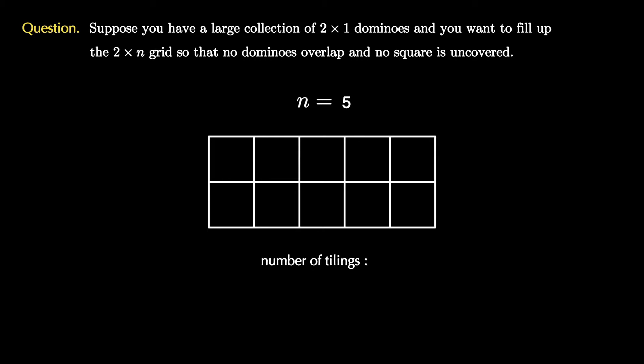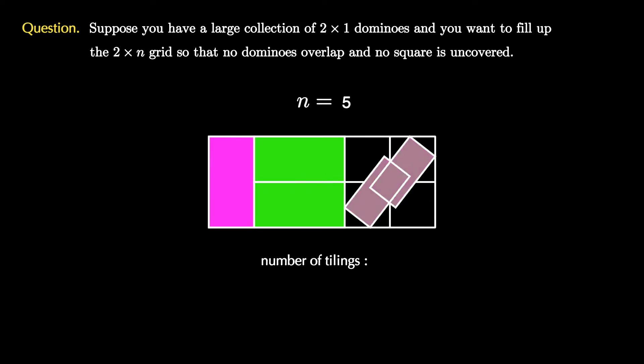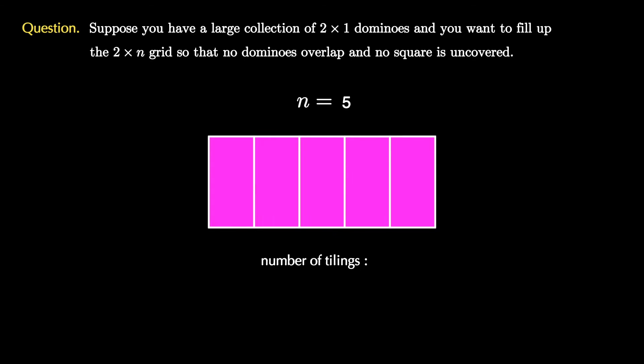Things get a bit more interesting if we consider the 2×5 board. Now we can list out all the tilings like this. Once we're finished, we see that there are a total of 8 tilings.